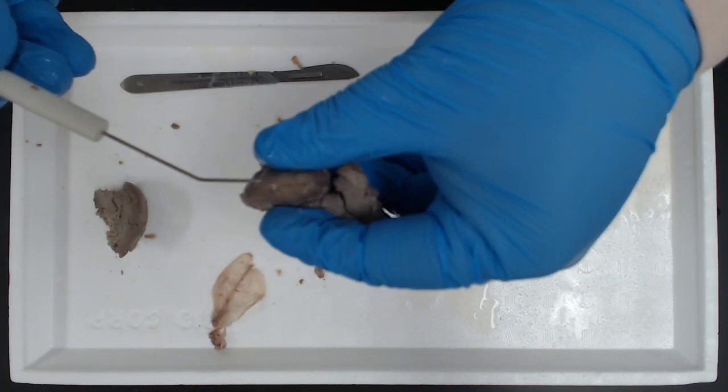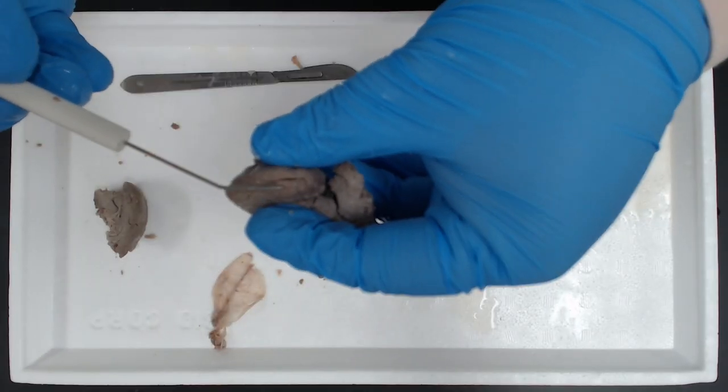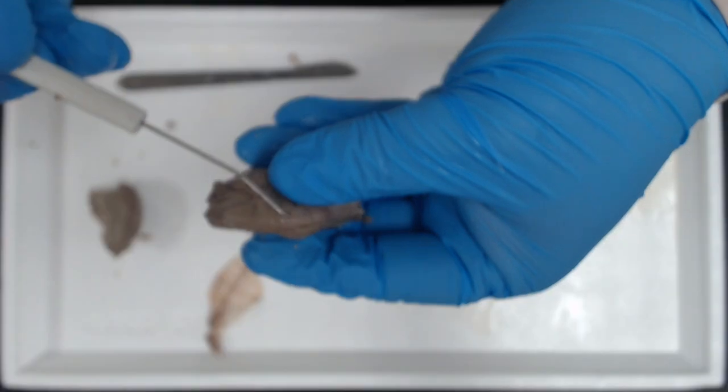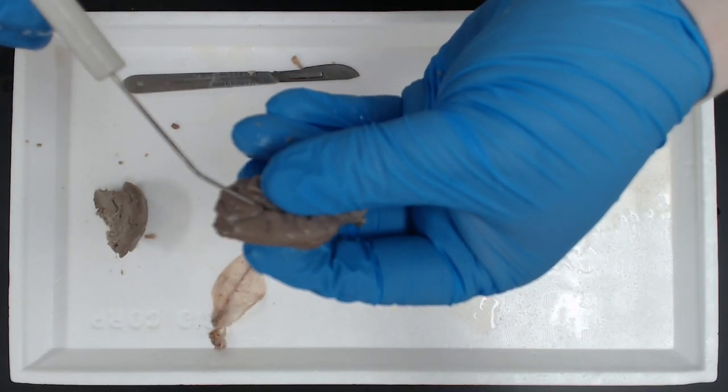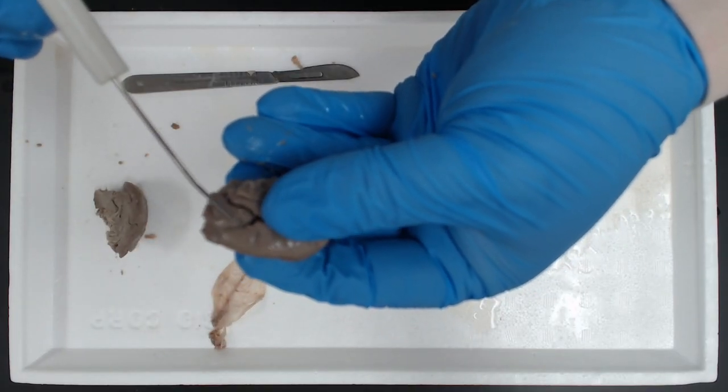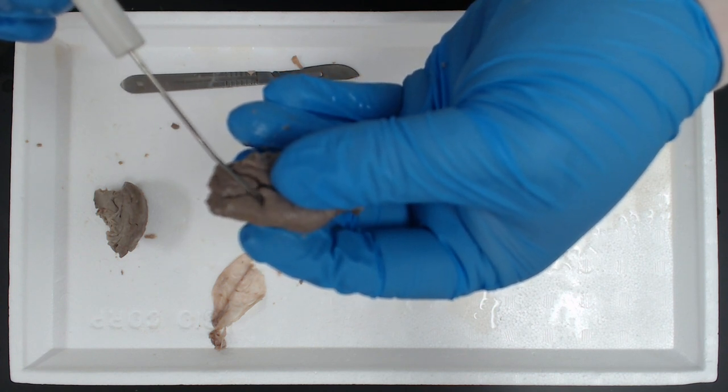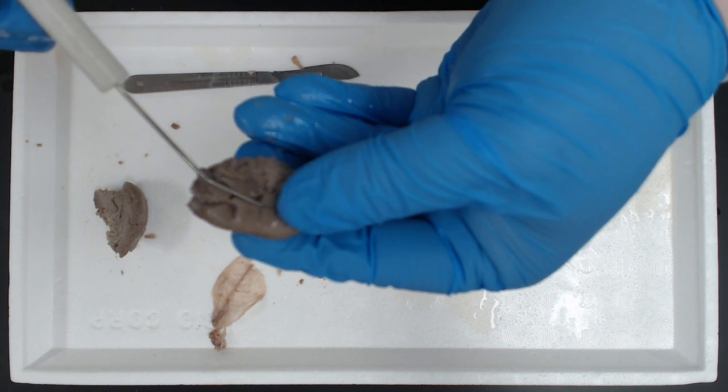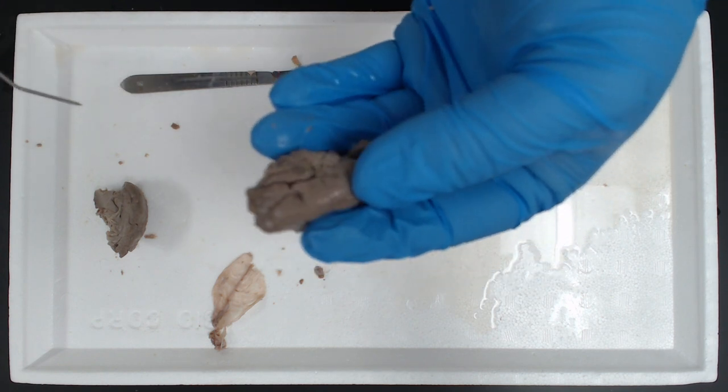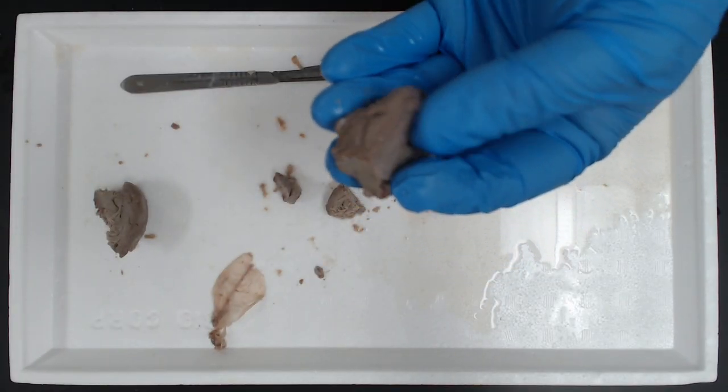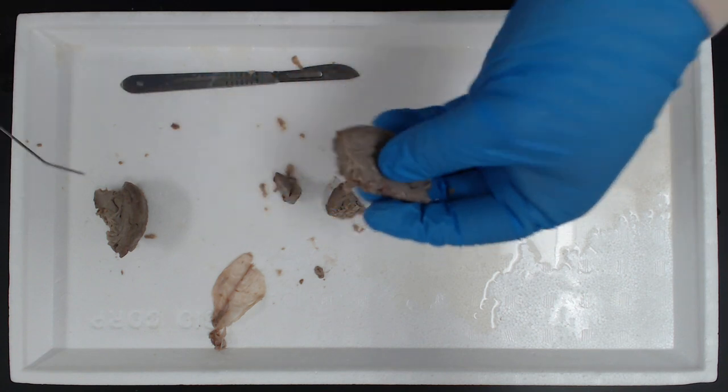We see these really nice gyri, these bumps in the brain, and then these really nice deep sulci, these crevices within the brain. More folding within the brain gets us a quicker connection speed of the neurons interacting together. That's a really nice looking brain there.